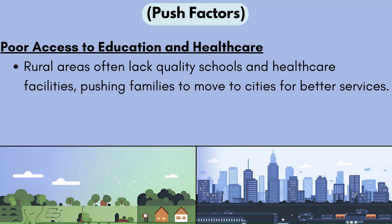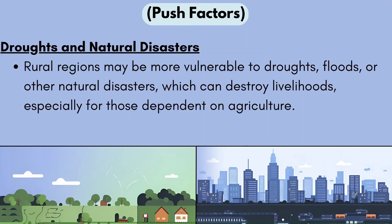Another push factor is poor access to education and healthcare. Rural areas often lack quality schools and healthcare facilities, pushing families to move to cities for better services. As people grow older and get sick, they need quality healthcare, which isn't available in rural areas — causing them to move to an urban area to access these services.